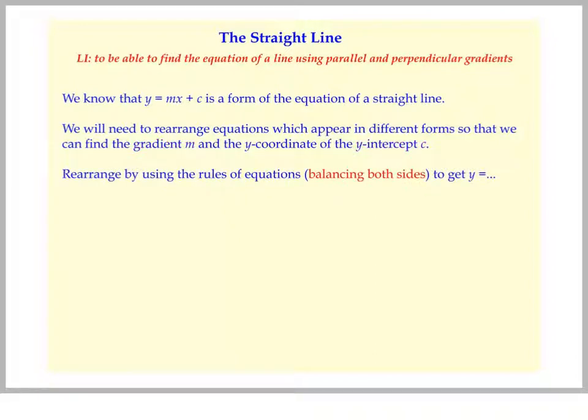If we don't have this, the rules of equations mean we balance both sides and eventually we will get y equals everything else. And it's best to write it in mx plus c form first, so that x term is first and then the individual numbers at the end.